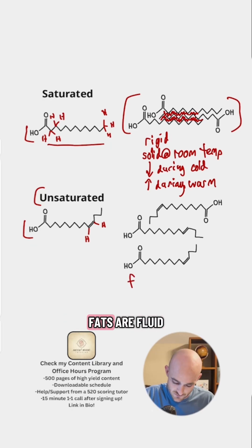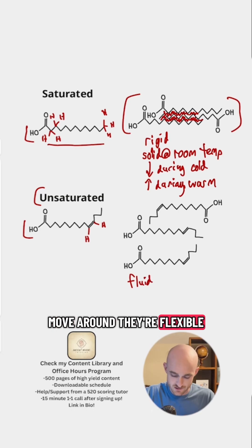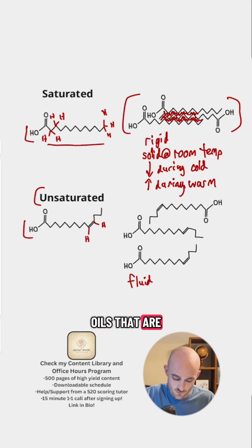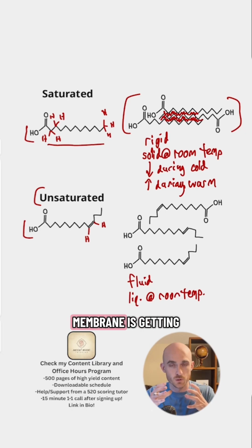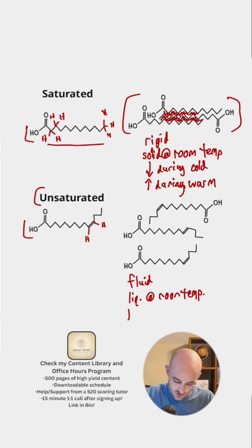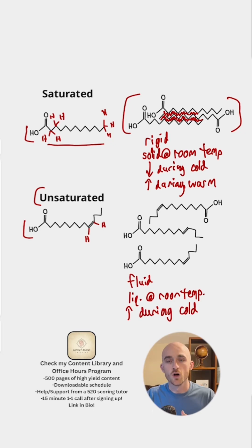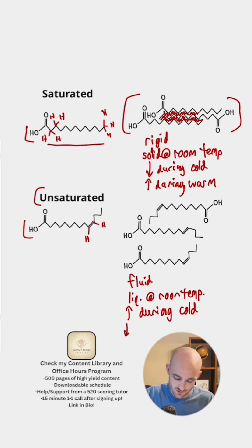For unsaturated, we pretty much see the exact opposite. Membranes with a lot of unsaturated fats are fluid — they can move around, they're flexible. Oils made of unsaturated fats are going to be liquid at room temperature. Whenever it's cold and the cell membrane is getting more rigid, we're going to try to create more unsaturated fats. And when it's warm, we don't want too much unsaturated, or else the cell membrane gets too fluid, so we're going to decrease the number of these during warm temperatures.